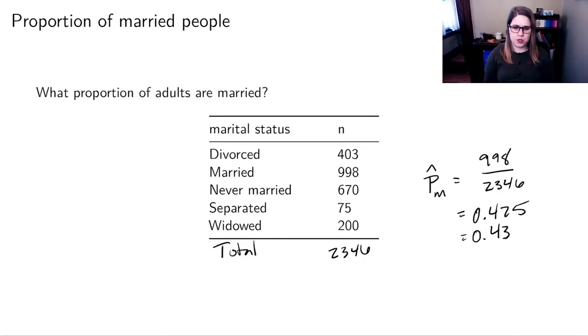So I figured out the proportion of married people. If you wanted to, you could practice by finding the proportion of divorced people or separated people, never married, widowed, one of those other categories. And I'm going to actually show you the answers on the next screen.